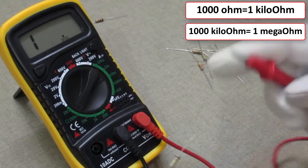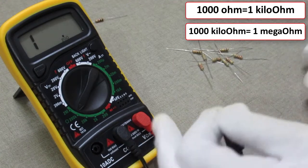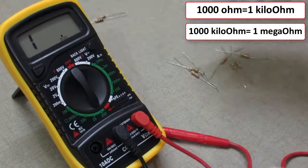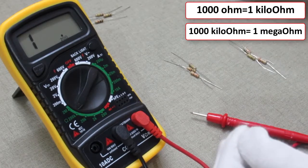Set the multimeter to 200 kilo ohm range, then check the resistance. The multimeter is showing 178 kilo ohms resistance.